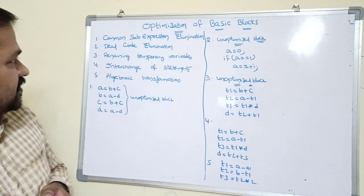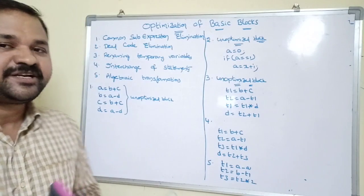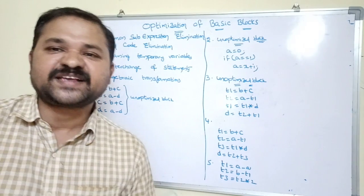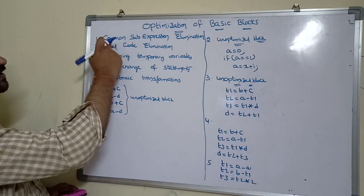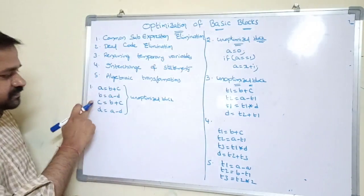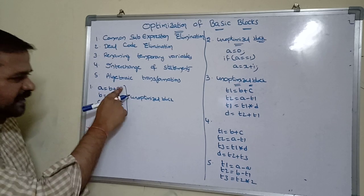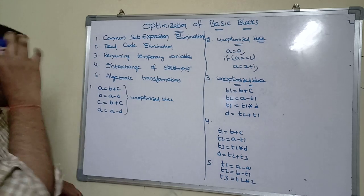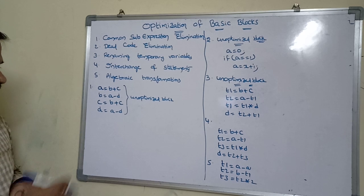The first approach is common sub-expression elimination. A common sub-expression is an expression which has been computed previously and whose values have not changed. Consider this example: a = b + c, b = a - d, c = b + c, d = a - d. On the right-hand side we have two expressions: b + c and a - d, which are common sub-expressions. However, these values should not change — if they change, it is not possible to perform the replacement.